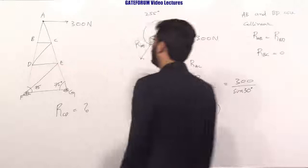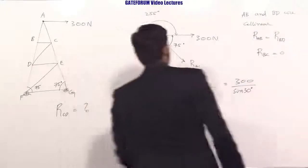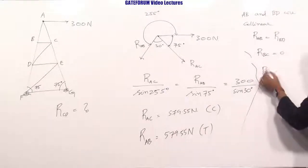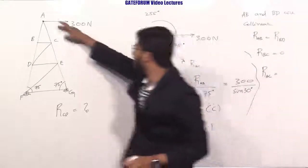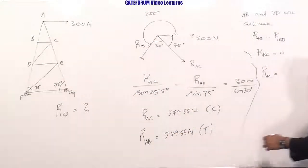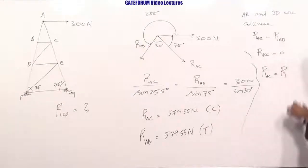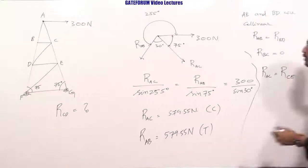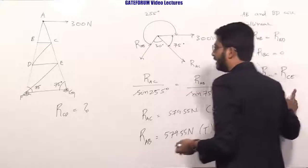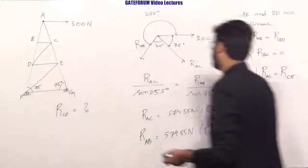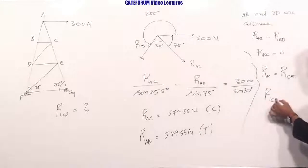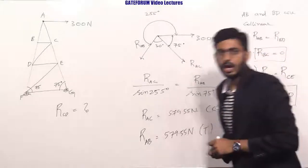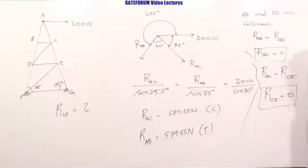Similarly, going to joint C: member AC is collinear with member CE, so RAC equals RCE. Since those two reactions are collinear and equal in magnitude, RCD equals zero. So CD is also a zero-force member, and the force in CD is 0 Newtons.